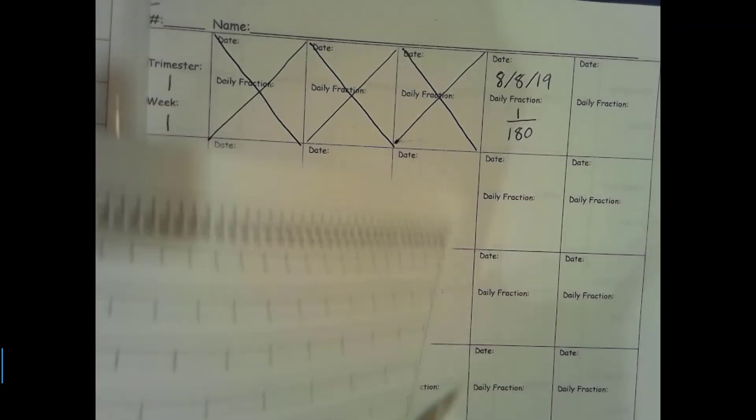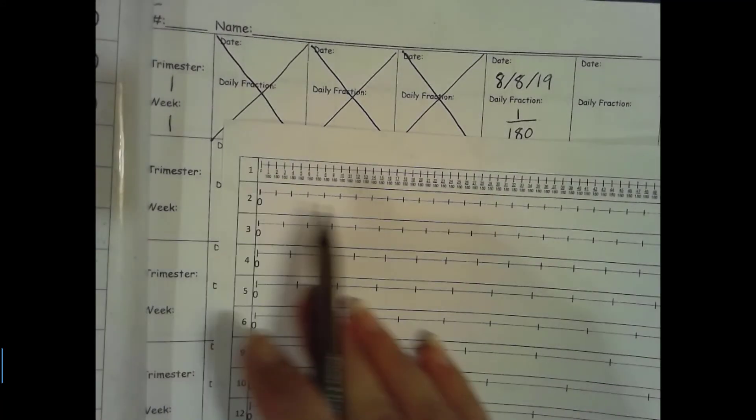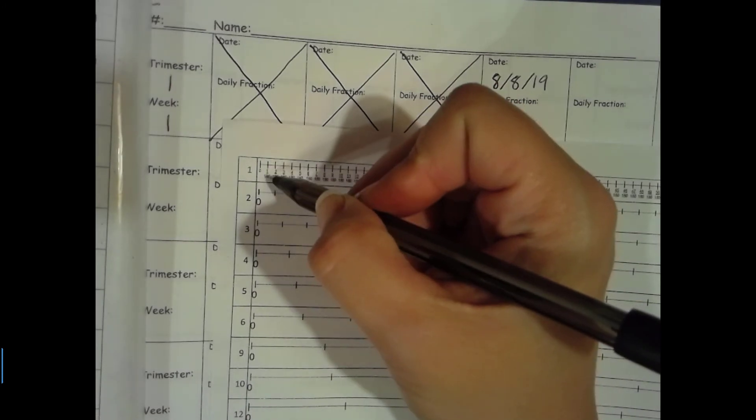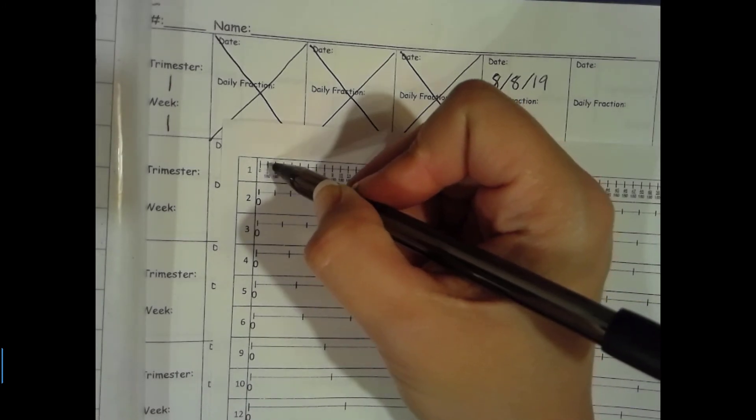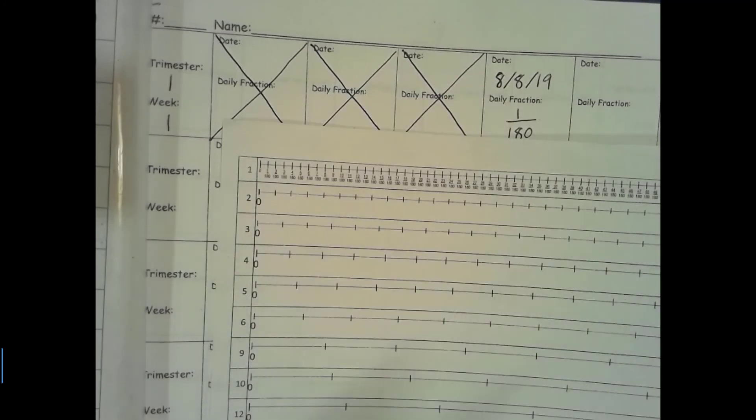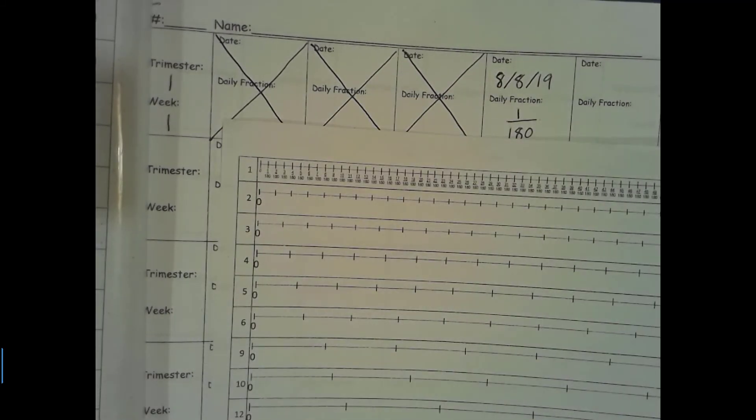So this represents our group of 1 days. They are already in there because they are so small it is hard to write. So here is today's 1 out of 180. That is our fraction for today. You don't have to fill it in. The only ones you don't have to fill in are when we do groups of 1. The rest you will.